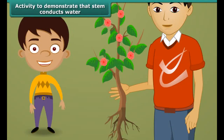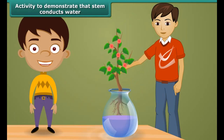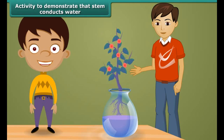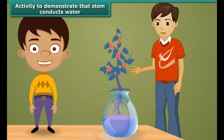Let us perform an activity to demonstrate that the stem conducts water. Take a balsam plant with roots and put it in a pot containing colored liquid. After a while you will observe the same color in the stem, leaves, etc. of the plant. This proves that the stem conducts water from the roots to the other parts of the plant body.